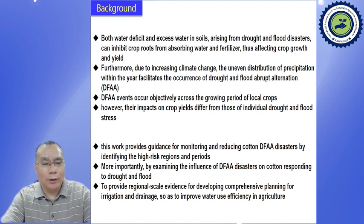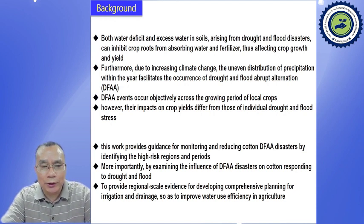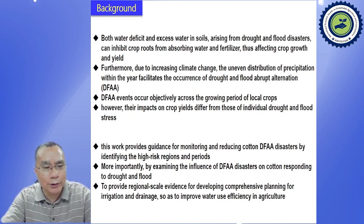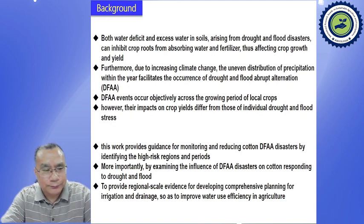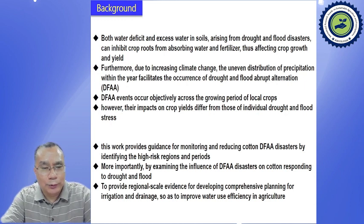Furthermore, due to increasing climate change, the uneven distribution of precipitation within the year facilitates the occurrence of drought and flood abrupt alternation. We use the abbreviation DFAA to indicate drought and flood abrupt alternation.